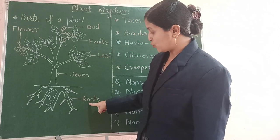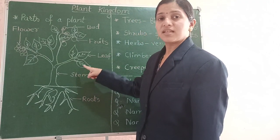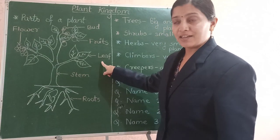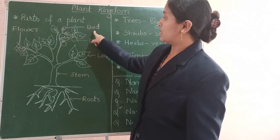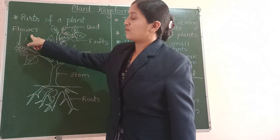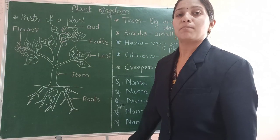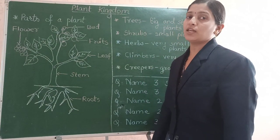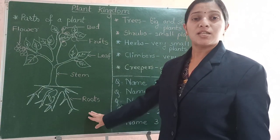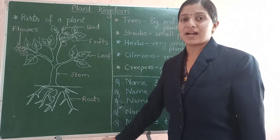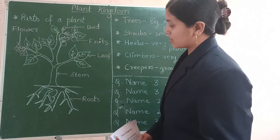Here we have roots, then stem, then leaf, fruits, bud, flower. All these are parts of the plant. Now we will learn these parts of the plants in detail.